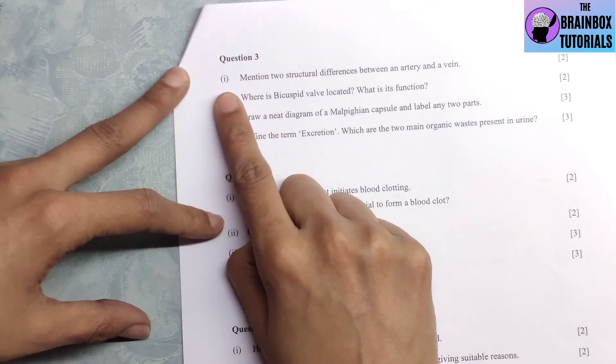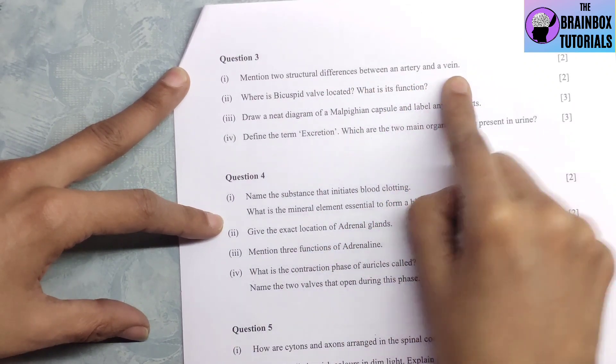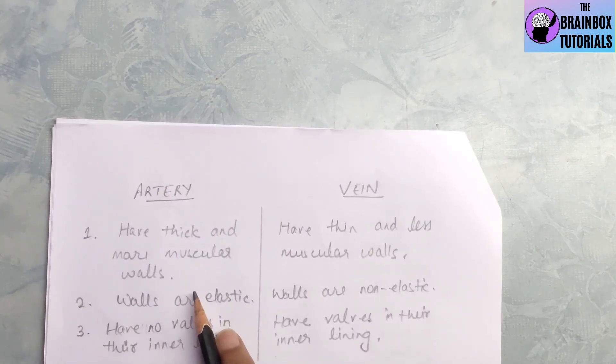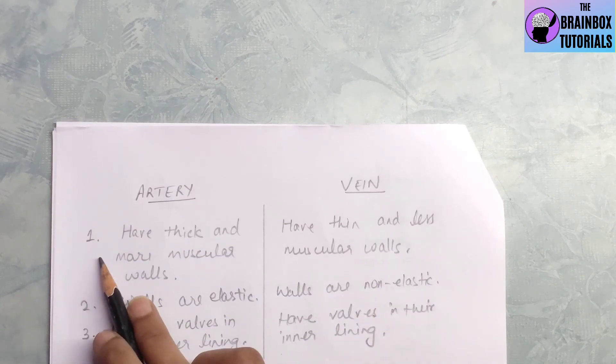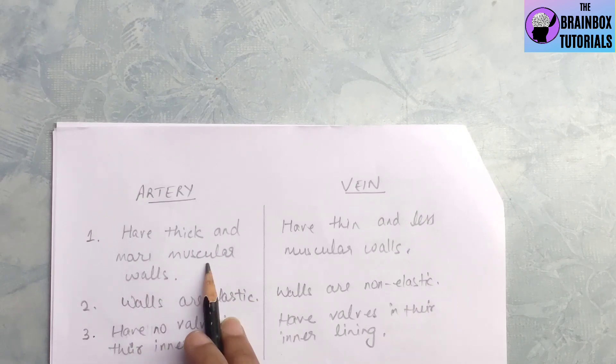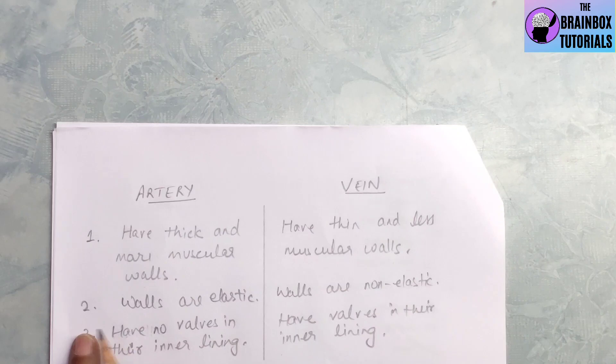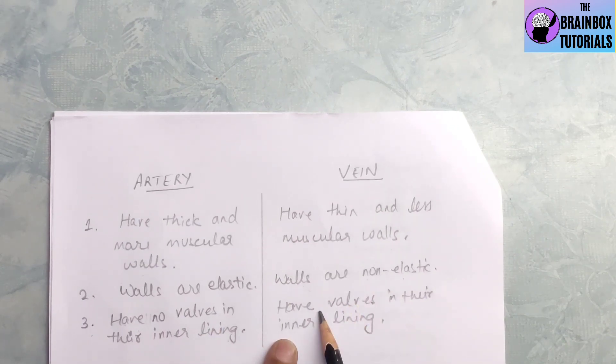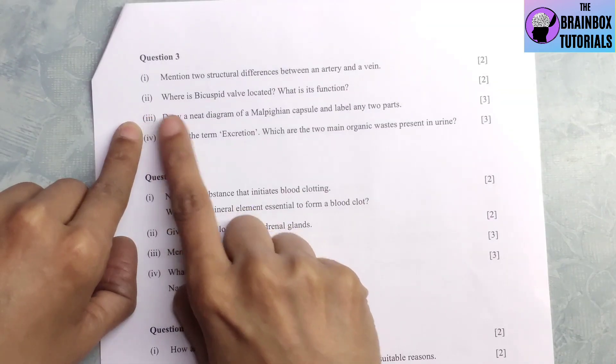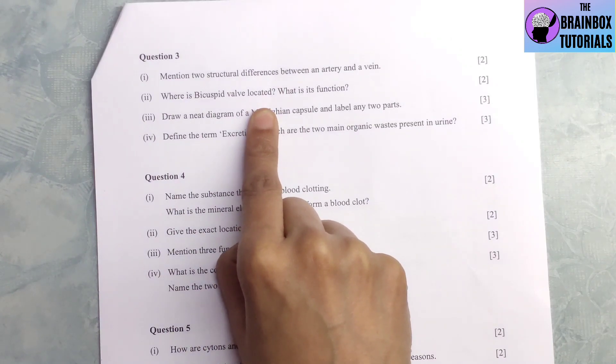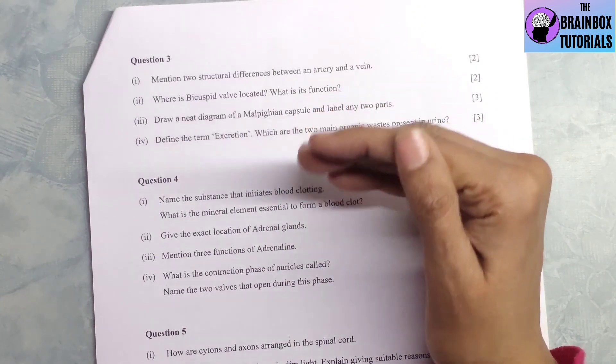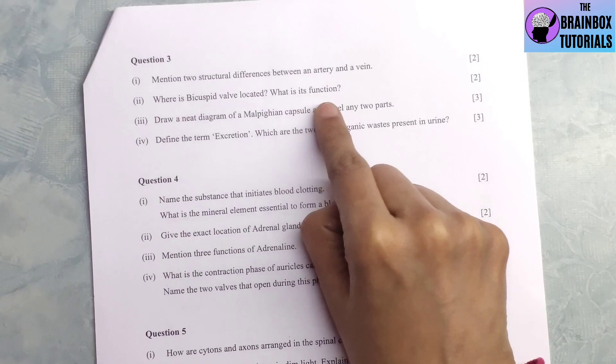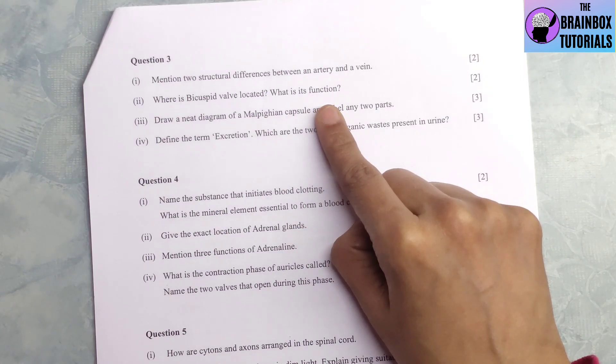Question 3, number 1 is mention two structural differences between an artery and a vein. Here are the structural differences. There are two columns, left side artery and right side vein. Number 1, arteries have thick and more muscular walls, veins have thin and less muscular walls. Number 2, walls are elastic in artery, walls are non-elastic in vein. Number 2, where is bicuspid valve located? Bicuspid valve is located in the heart between left atrium and left ventricle. What is its function? Bicuspid valve ensures unidirectional flow of blood from left atrium to the left ventricle.